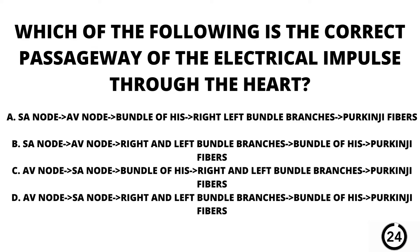Question number three. Which of the following is the correct passageway of the electrical impulse through the heart? A. The SA node to the AV node to the bundle of His to the right and left bundle branches to the Purkinje fibers. B. SA node to the AV node, right and left bundle branches, bundle of His, then Purkinje fibers. C. AV node, SA node, bundle of His, right and left bundle branches, Purkinje fibers. Or D. AV node, SA node, right and left bundle branches, bundle of His, then Purkinje fibers.